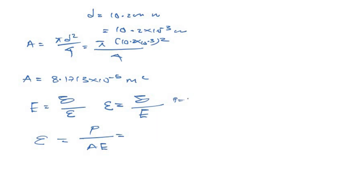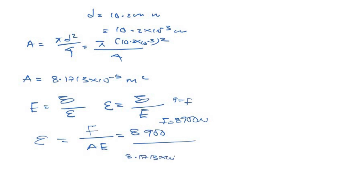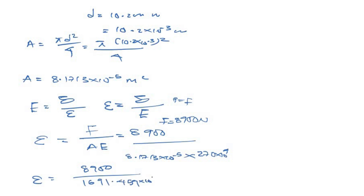The force F is equal to 8900 Newtons. So our strain equals 8900 divided by the area 8.1713 times 10 to the power of minus 5, multiplied by the modulus of elasticity 207 times 10 to the power of 9. Multiplying the denominator gives 1691.459 times 10 to the power of 4.